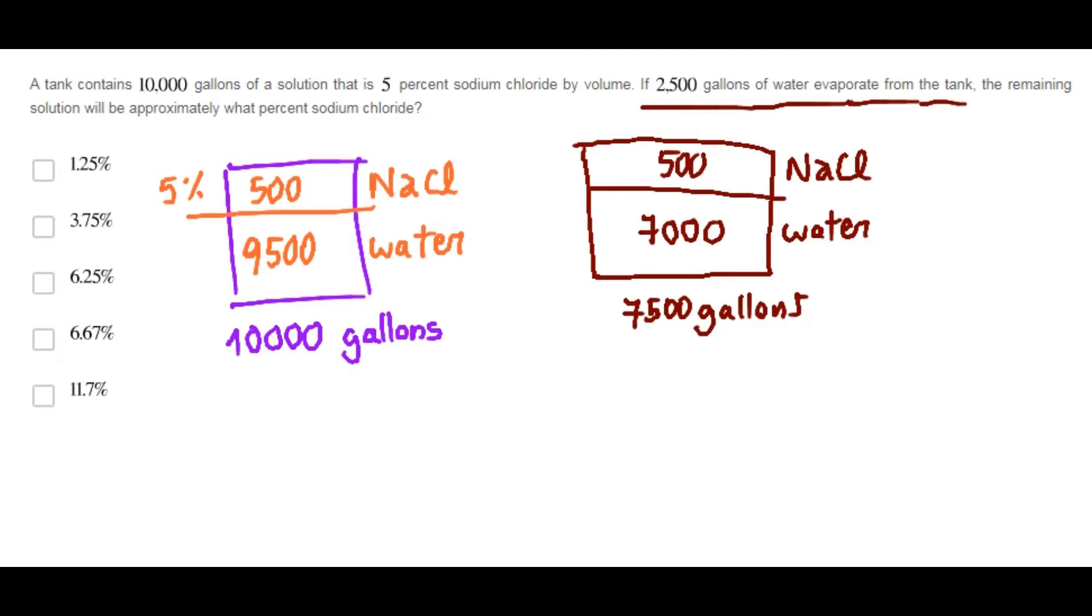We want to know sodium chloride is what percent of the new mixture. So, 500 gallons is what percent of 7,500 gallons. This is what we want to know. And I will cancel zeros here.